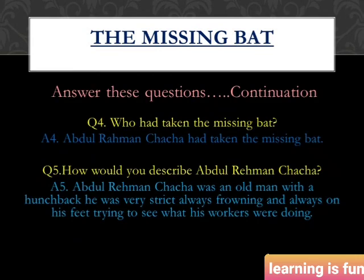The fourth question asks: who had taken the missing bat? The answer is: Abdulrahman's cha-cha had taken the missing bat. The fifth question is: how would you describe Abdulrahman's cha-cha? The answer is: Abdulrahman's cha-cha was an old man with a hunchback. He was very strict, always frowning, and always on his feet trying to see what his workers were doing.